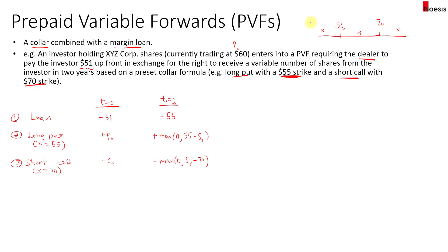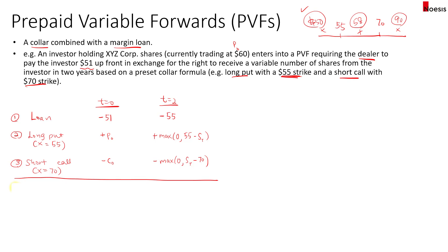We'll go with $50 on the lower side, $58 between the two strikes, and $90 above the upper strike. In Scenario 1, the share price at maturity is $50. In this case, the loan payoff is negative $55.